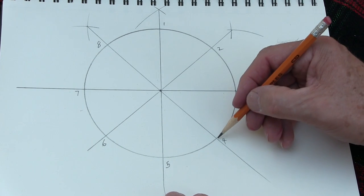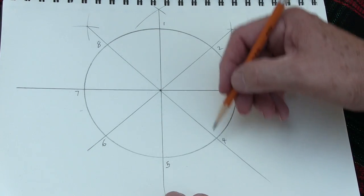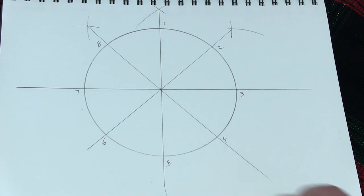Now you're going to join point one to four, two to five, three to six, four to seven, and so on. You're going to go all the way around.